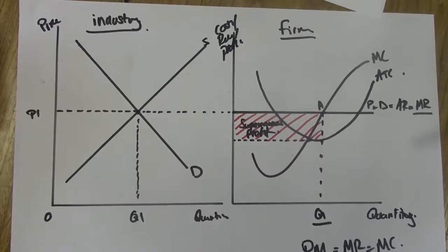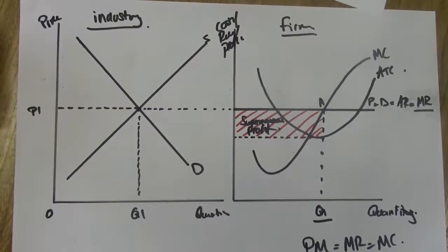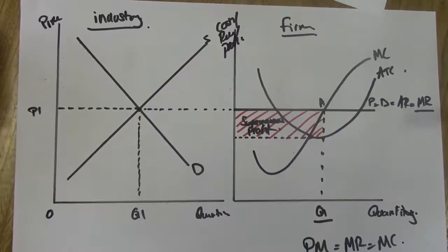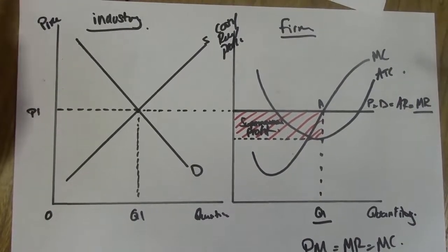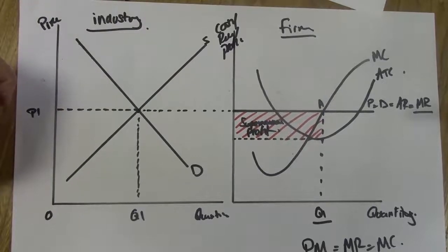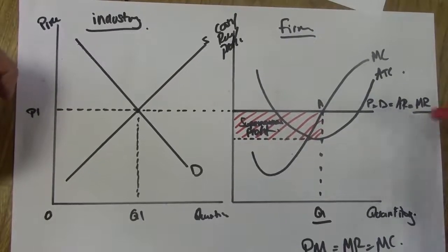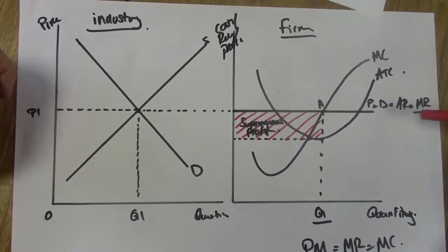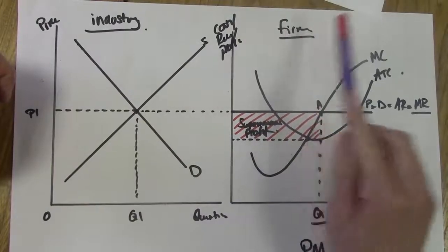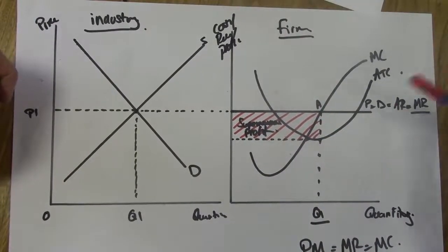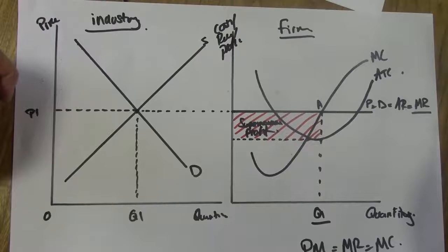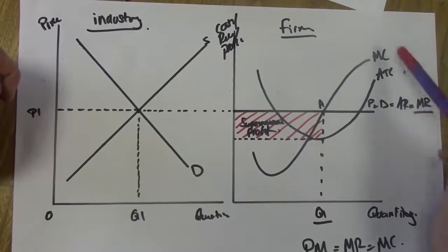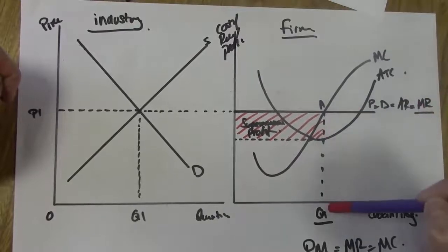A few reminders about what you need to do with these diagrams in the exam. Get into the habit of labeling diagrams as soon as you draw the axes — label price, quantity, etc. For all diagrams in Econ 3, Econ 4 or any paper, label the axes immediately. Every curve you draw, label it straight away — you will be marked down if you don't. Always indicate which diagram is the industry and which is the firm.